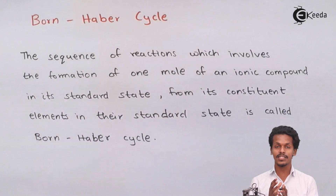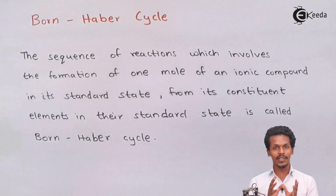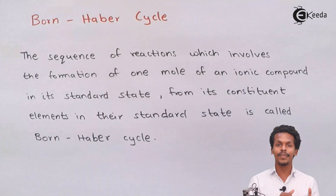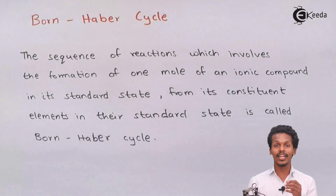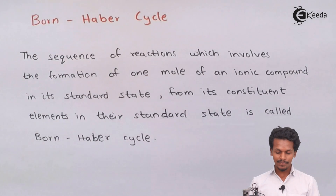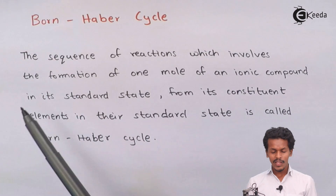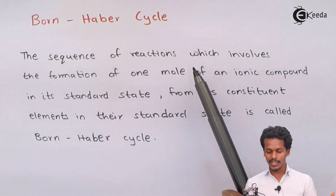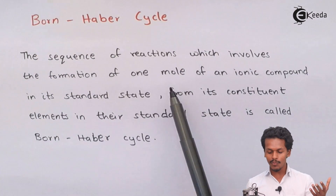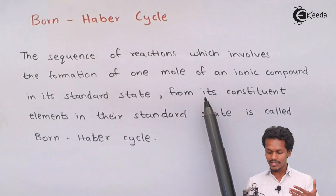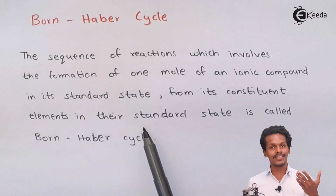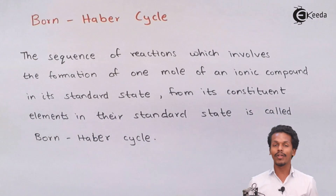For that, we have to take a sequence of reactions, and because of Hess's Law we could determine what would be the lattice energy of a particular ionic solid. The Born-Haber Cycle, developed by two scientists, combined all the sequence of reactions that take place during the formation of an ionic solid. The sequence of reactions which involves the formation of one mole of an ionic compound in its standard state from its constituent elements in their standard state is called the Born-Haber Cycle.